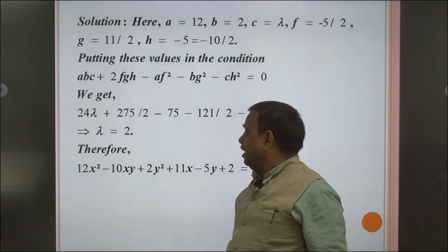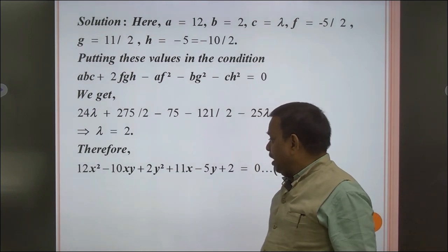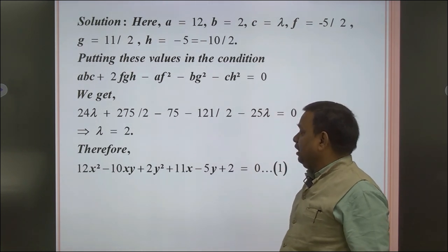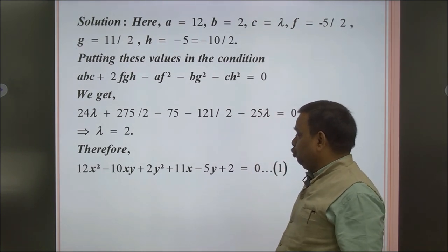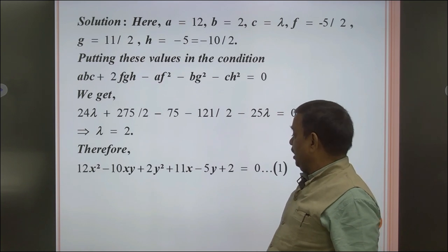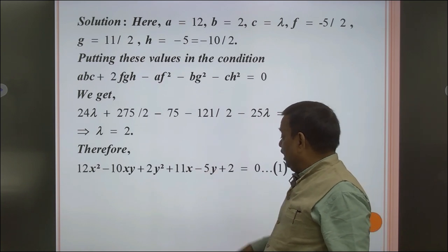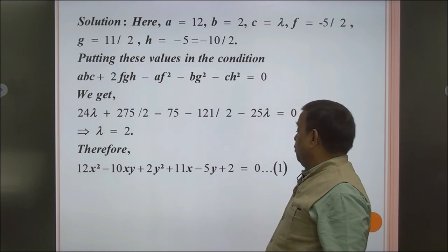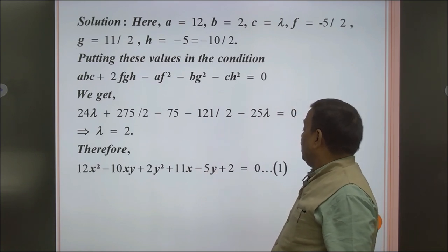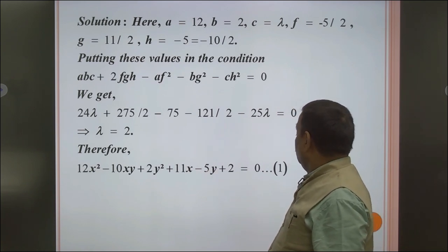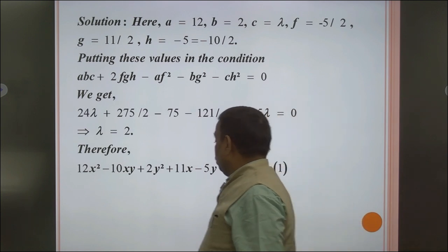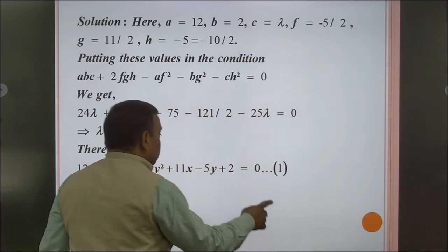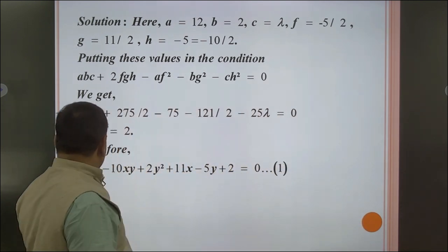Therefore, 12x² − 10xy + 2y² + 11x − 5y + 2 = 0 — call this equation (1) — represents a pair of straight lines.